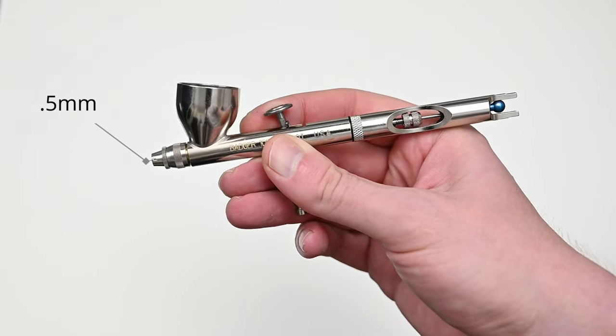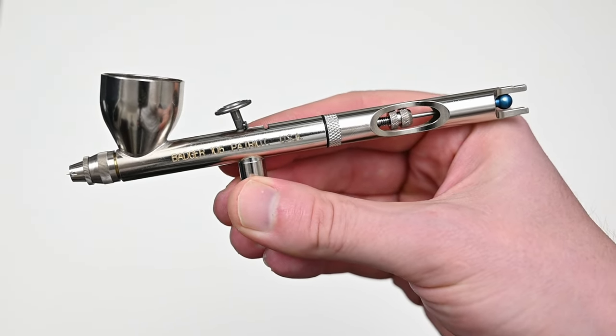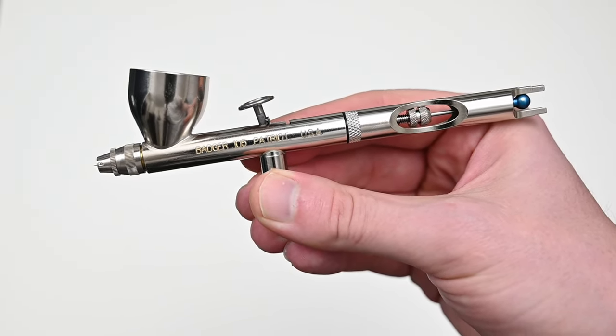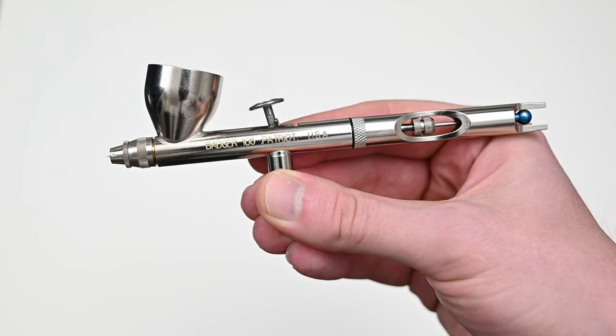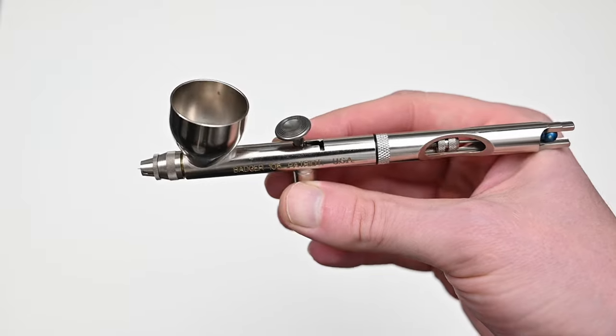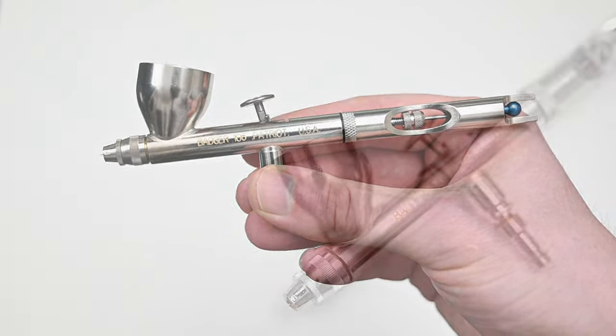This makes the Patriot more of a general use airbrush. You shouldn't have any problems spraying thicker paint through it and you could also use it to get some decent detail. What I like about a nozzle this size is that I could use any paints right out of the bottle like Golden High Flow Acrylics, Wicked Colors, or Createx Illustration Colors without having to dilute them.